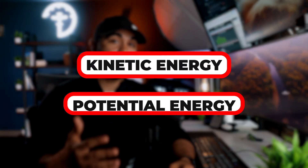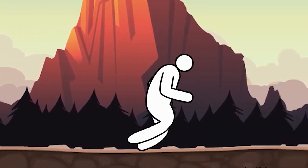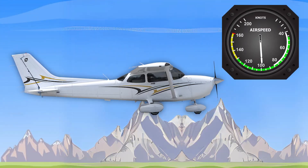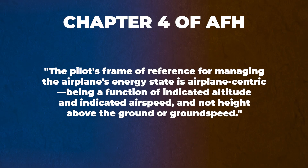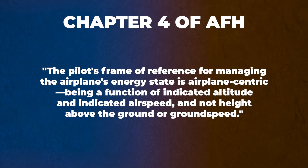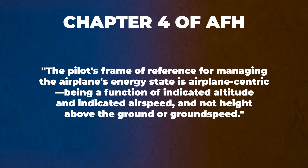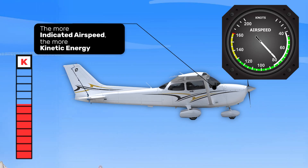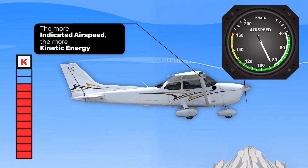If you've ever taken an introductory physics class, you've probably heard the terms kinetic energy and potential energy — but don't worry if not, I'm going to explain them here. Kinetic energy is the energy of motion, and in our case it's how fast we're going, or in other words, our airspeed. More specifically, as it pertains to us pilots, kinetic energy is our indicated airspeed, which is how fast we're traveling through the air rather than over the ground. So the more indicated airspeed you have, the more kinetic energy you have.